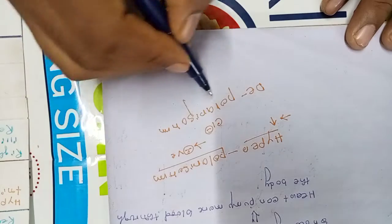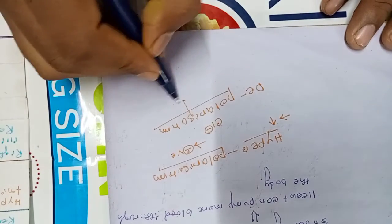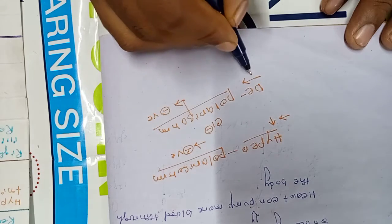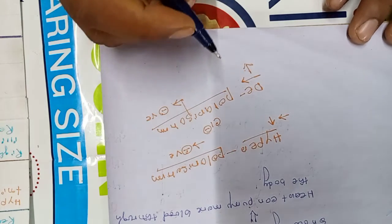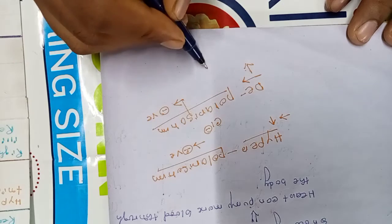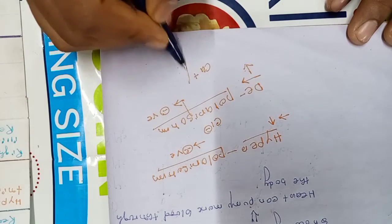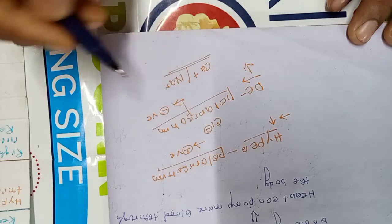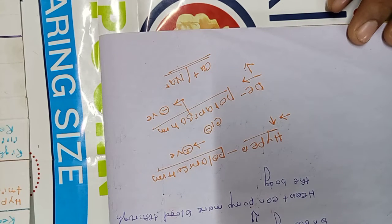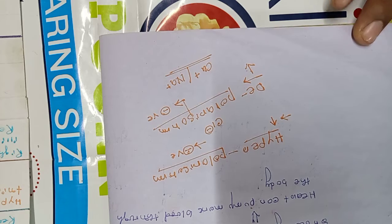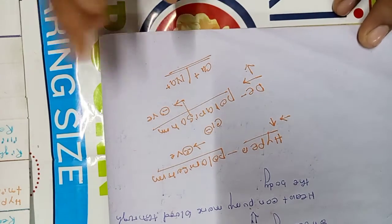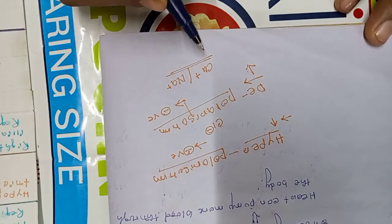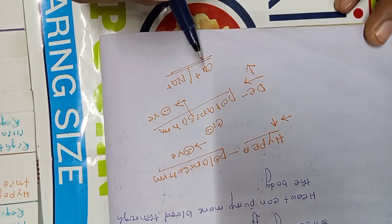Depolarization means when negativity decreases. Decrease negativity happens with entry of positive ions like calcium and sodium. When calcium and sodium enter into the cell membrane, that time it will cause depolarization.